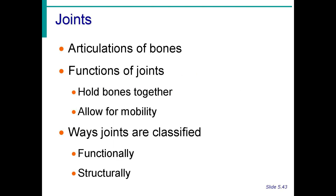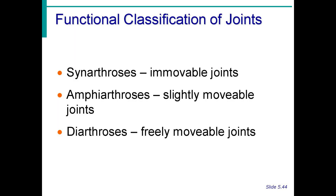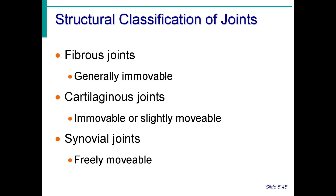The most important thing about joints is that they hold the bones together. Joints are classified into functional and structural types. There are three functional classifications: immovable joints called synarthrosis, slightly movable joints called amphiarthrosis, and freely movable joints called diarthrosis. Structurally, joints are divided into three: fibrous, cartilaginous, and synovial joints — the synovial joints are freely movable, like those of the knees.